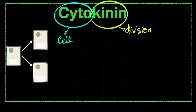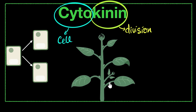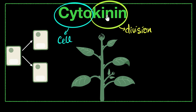Cytokinin is mostly responsible for creating new cells in a plant. Without it, you cannot have new leaves or fruits — basically the plant will not grow. It's also cytokinin that causes branching to happen in plants, since branches also require new cells. Without cytokinin, the plant will not survive.